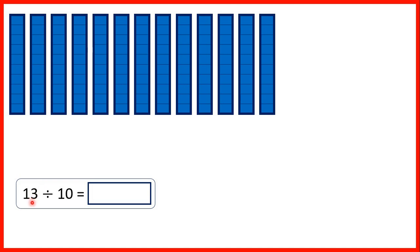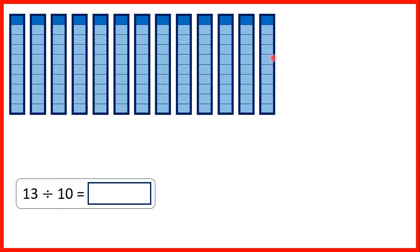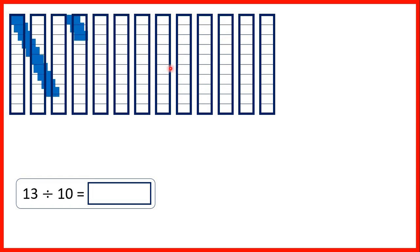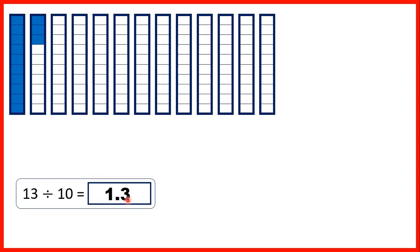For 13 divided by 10, I've drawn 13 rectangles. Dividing by 10 is the same as finding a tenth, so let's keep only 1 tenth of each rectangle. If we put what's left together, we can fill up 1 whole rectangle and 3 tenths of another rectangle. So that's 1 whole and 3 tenths — 1.3.